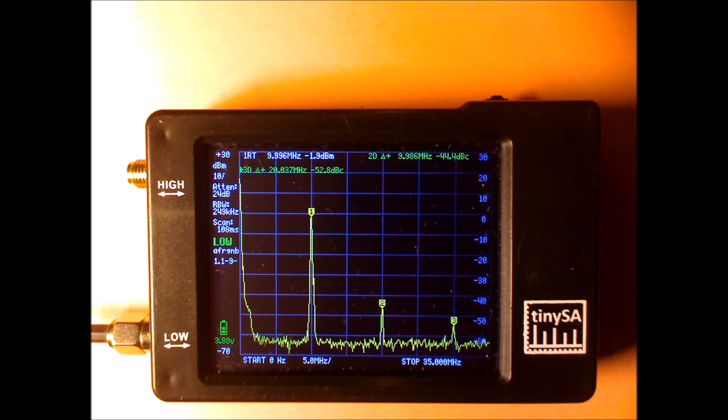For this measurement, I've changed the signal generator to a different signal generator. That's a DDS, a home-built DDS signal generator that promises a fairly clean signal. And I didn't change any of the settings compared to the previous measurement. And the only thing I changed is the resolution bandwidth. I set it back to automatic.